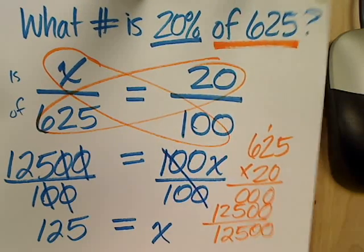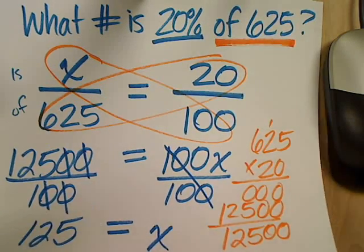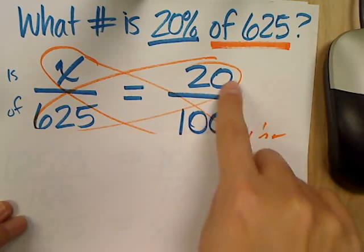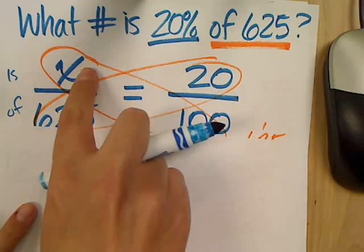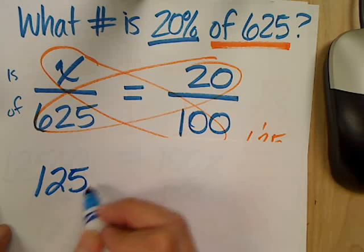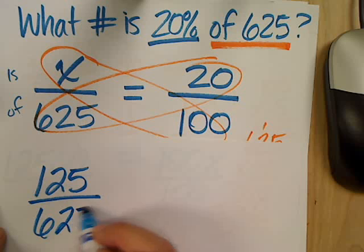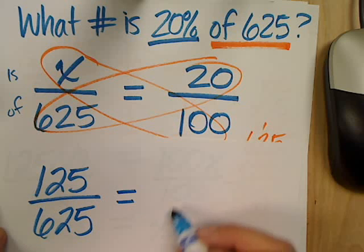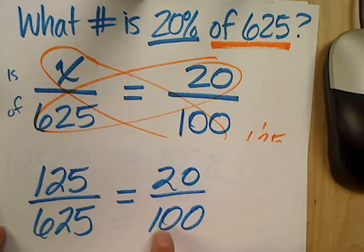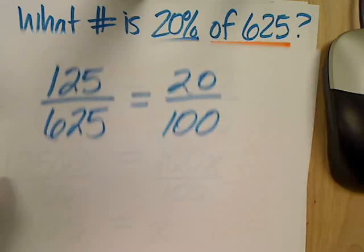Now, let me prove to you why this is the correct answer. If I take my original proportion here, and rather than writing an X, I write my answer of 125, it'd be 125 over 625 equals 20 over 100. Now, if I cross multiply, the two numbers should be exactly the same.